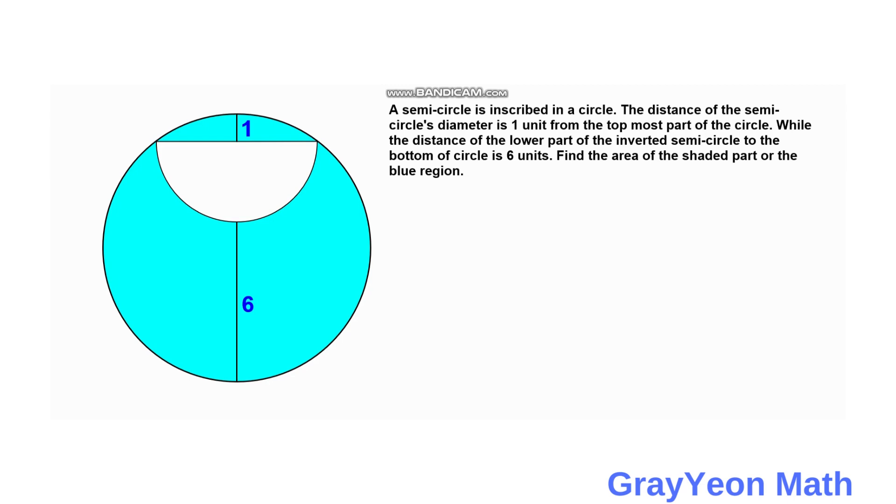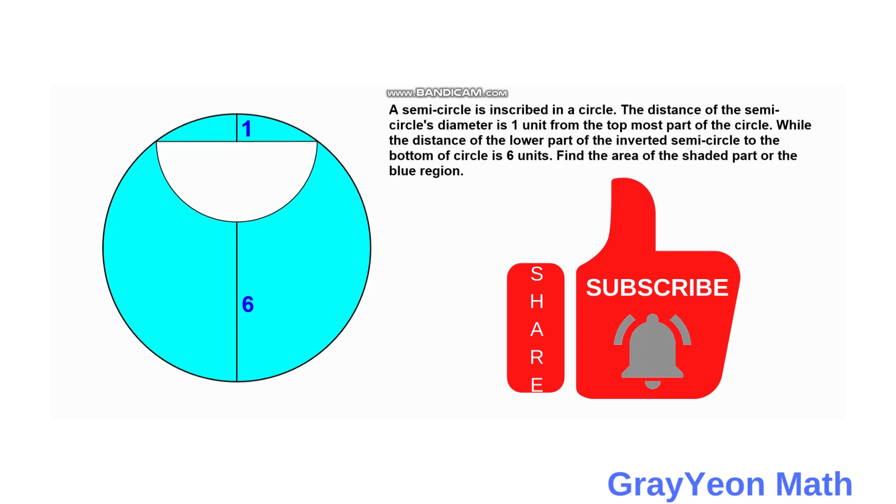While the distance of the lower part of the inverted semicircle to the bottom of the circle is 6 units. Find the area of the shaded part for the blue region.